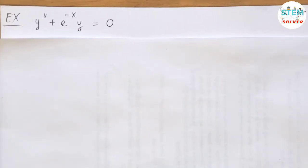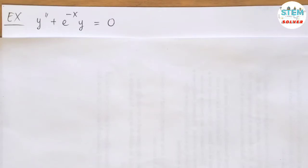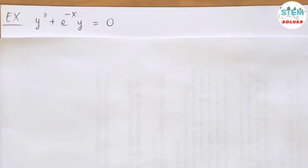According to a request from a person who would like me to solve a homogeneous differential equation: y'' plus e to the negative x times y equals 0. So in this video, I'm going to go over it. In order to solve this one, first of all, we need to determine if x equals 0 is analytic or not.